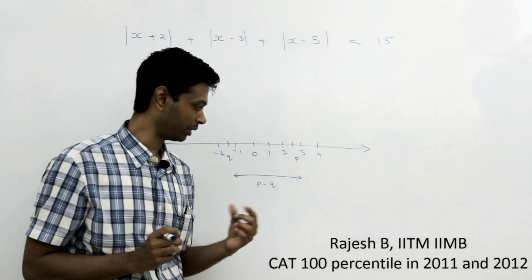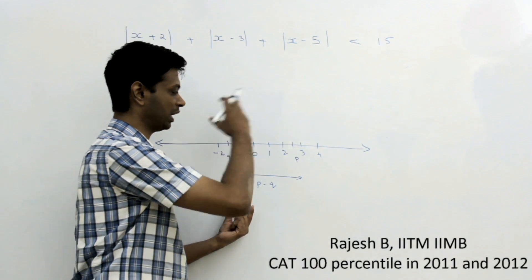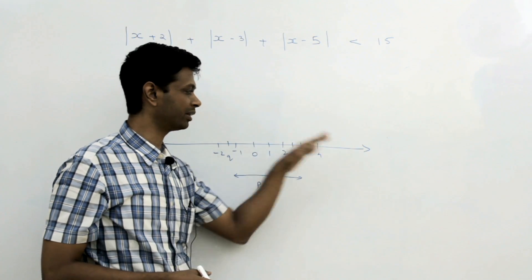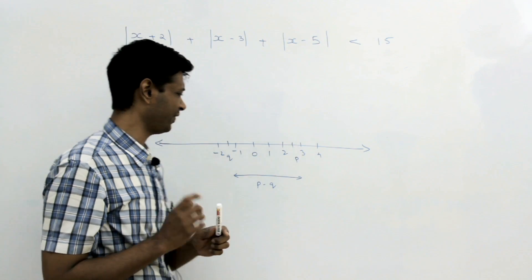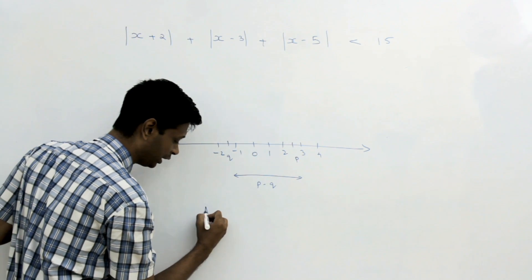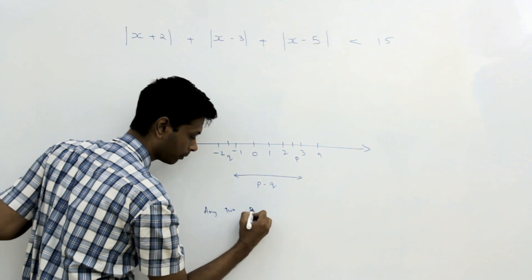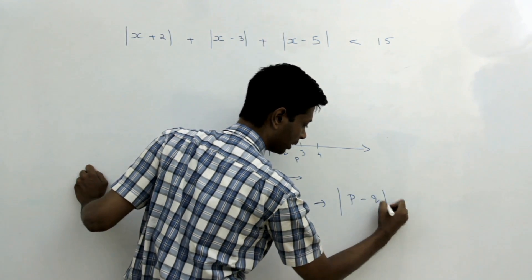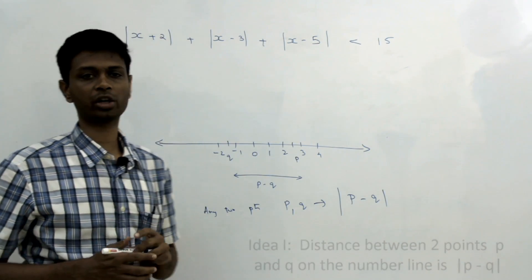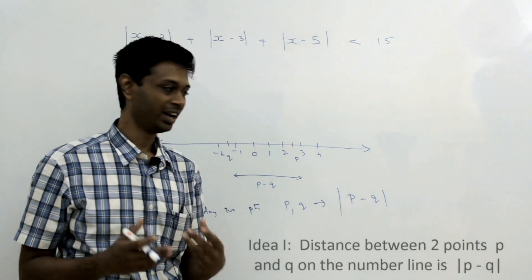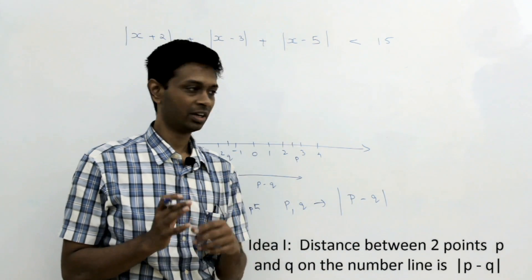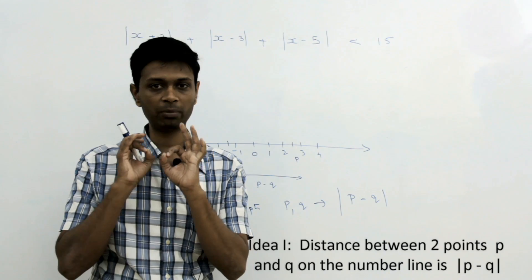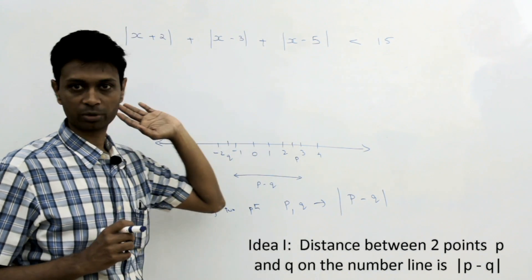Keep one thing in mind: I am writing this as p minus q because p is to the right of q, so p is larger. If q were on the other side, then it will be q minus p. Effectively, the distance between any two points p and q on the number line is |p - q|, because distance between two points cannot be negative. This is a very simple but extremely powerful idea that I am going to use to solve this problem.